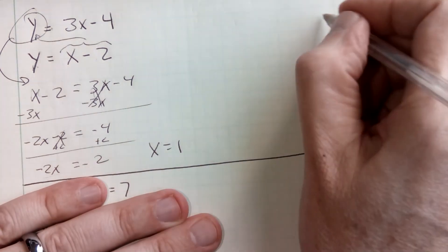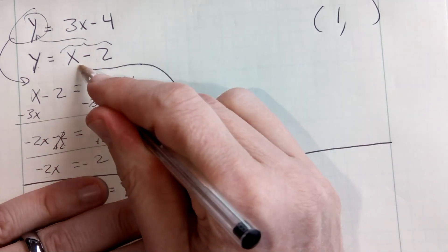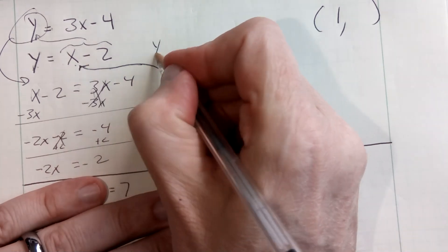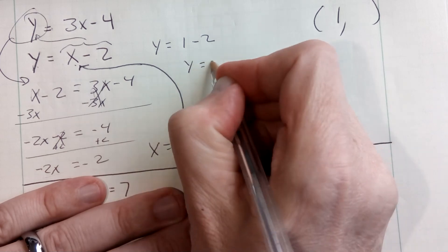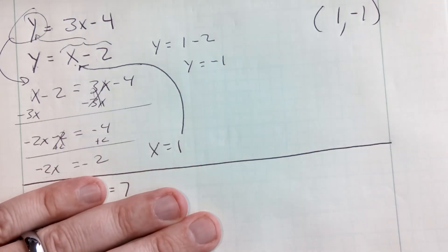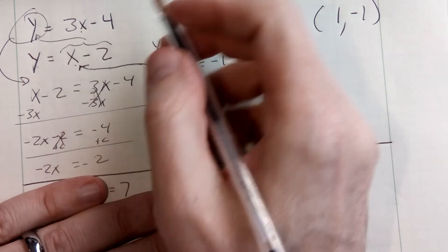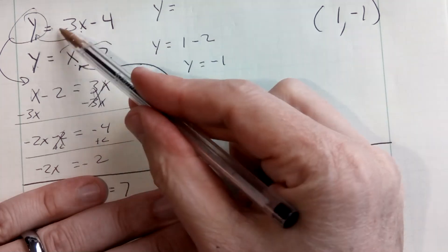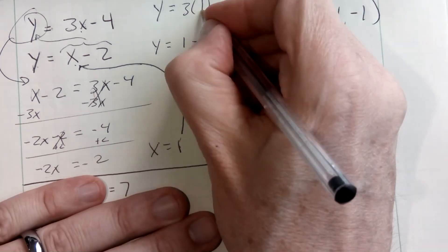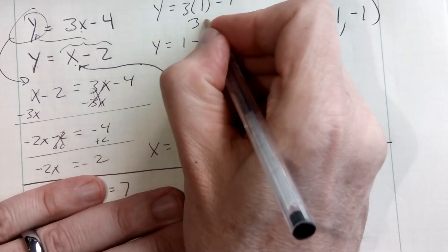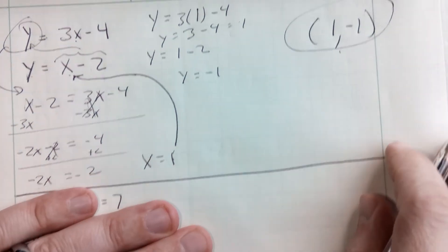Now I found my x value, but I still need to find my y value. I can plug it back into either equation. If I plug x equals 1 into the bottom equation: y equals 1 minus 2, so y equals negative 1. Let me show you that it works in the other equation as a check: y equals 3 times 1 minus 4. 3 times 1 is 3; 3 minus 4 is negative 1. So I did get the same y value. My point is (1, -1).